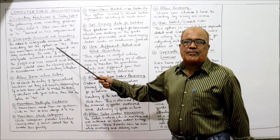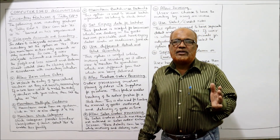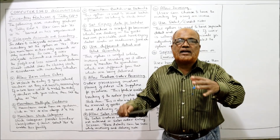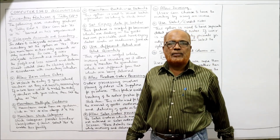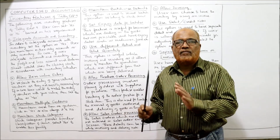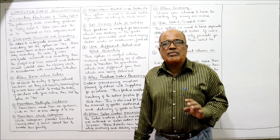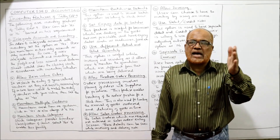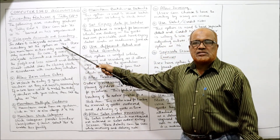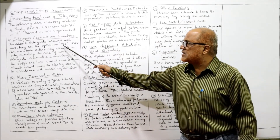The first feature is: integrate accounts and inventory. There are three methods through which inventory can be maintained — the user can maintain only accounts, only inventory, or integrated accounts and inventory. If the user selects only accounts, there will be no inventory data. If only inventory is selected, there are no accounts. Many businesses choose integrated accounts and inventory. To integrate, set the option to yes.